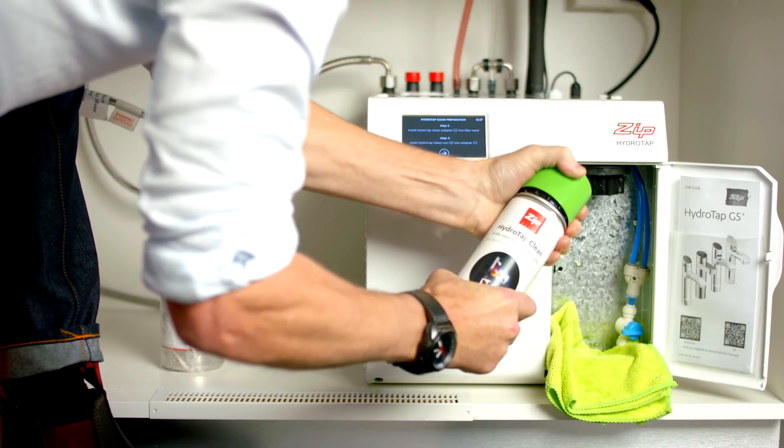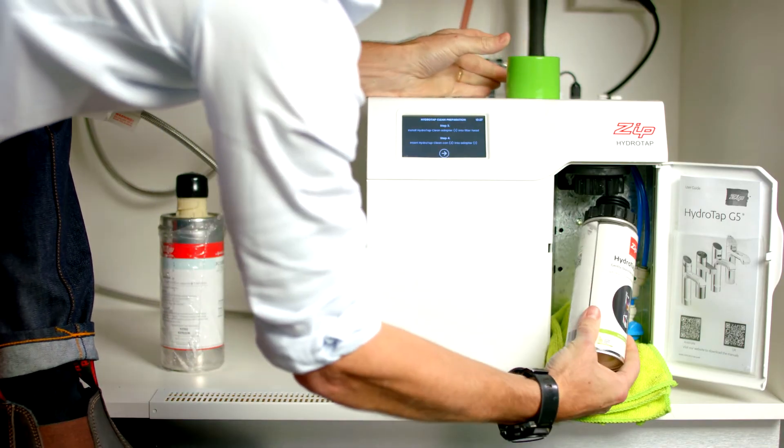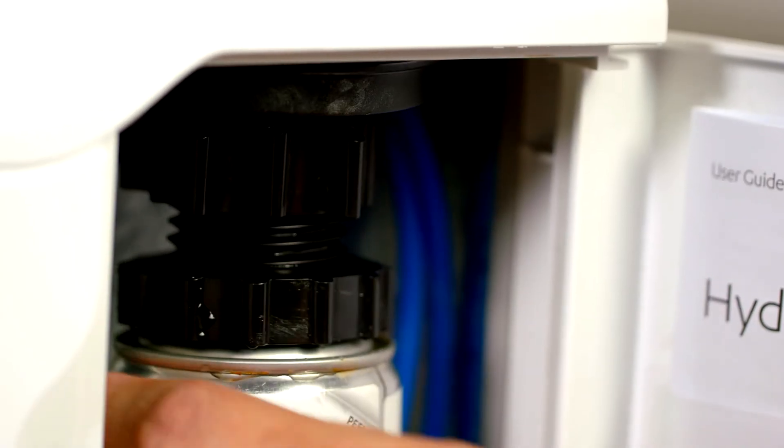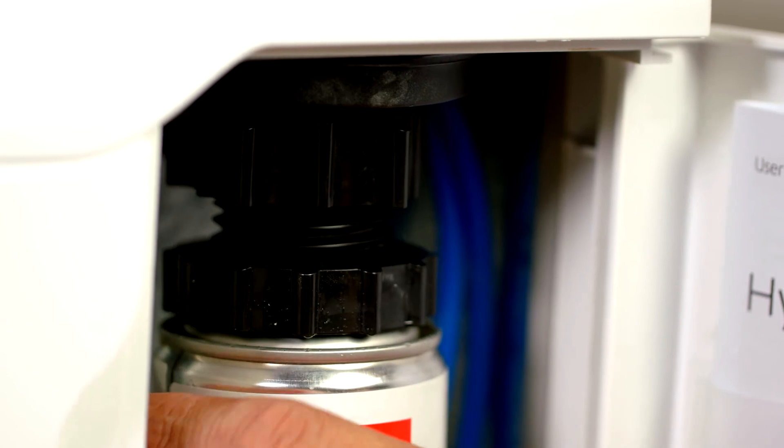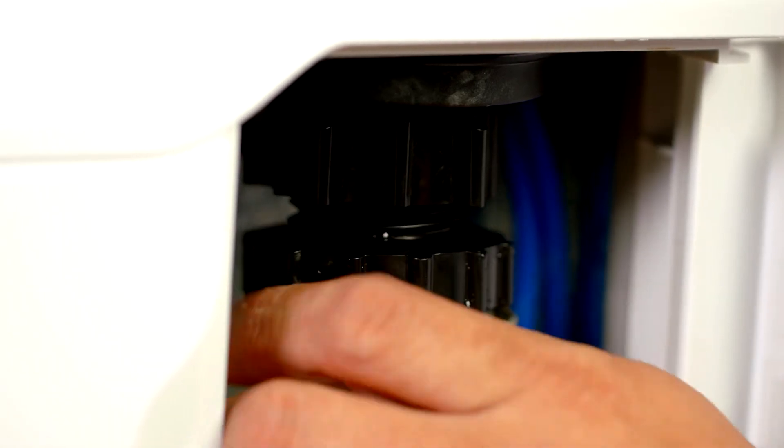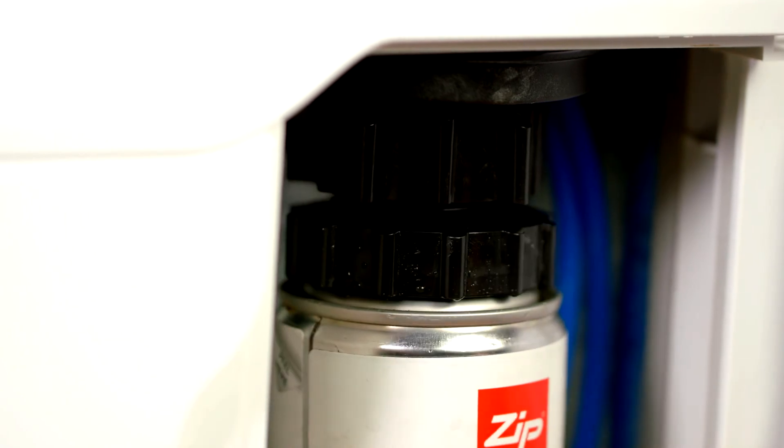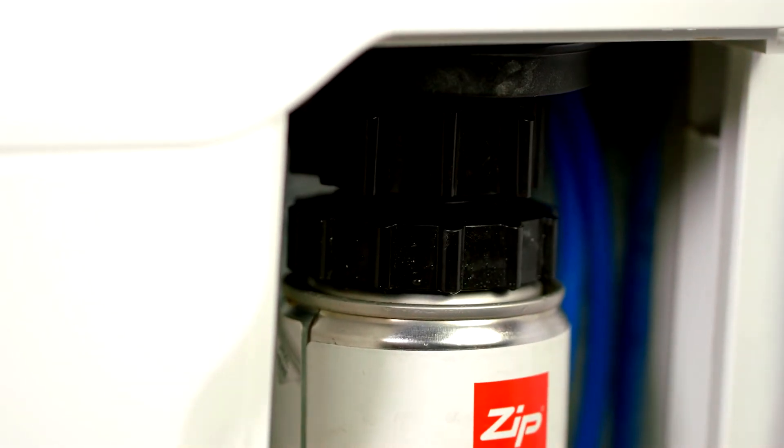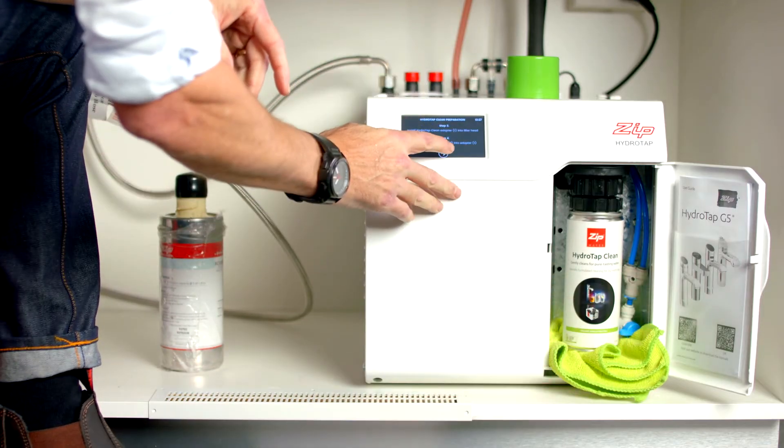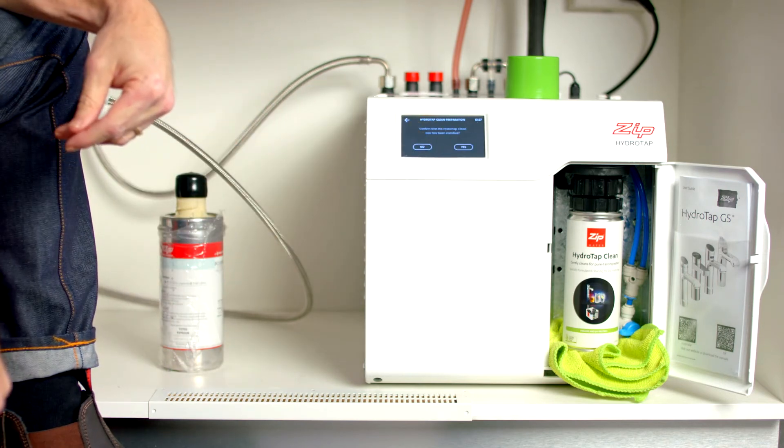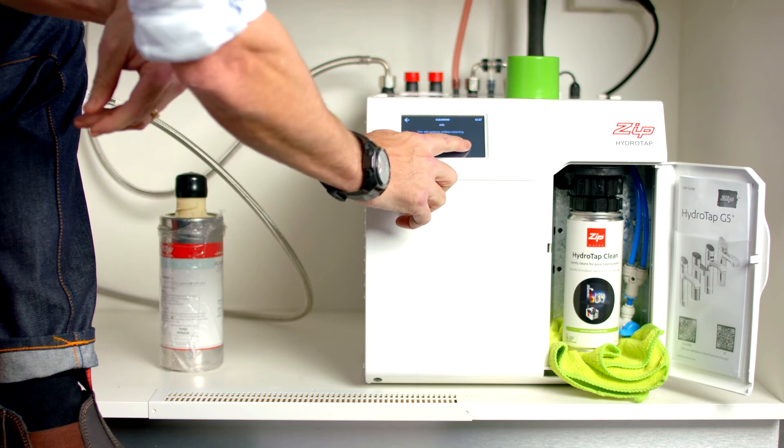Make sure the filter flush hose is off. Next remove the green lid from the HydraTap clean can. The can is designed to screw into the bottom of the adapter. Gently fit the can underneath the adapter and tighten. Press the next arrow and the next screen wants you to confirm you've fitted the HydraTap clean can and you're ready to start the commissioning process.